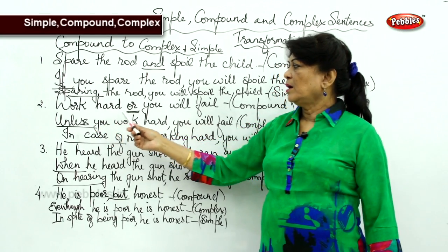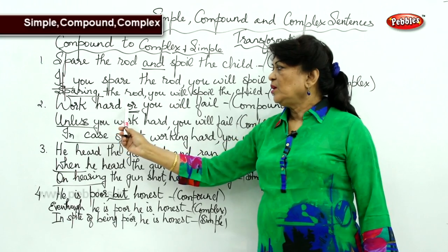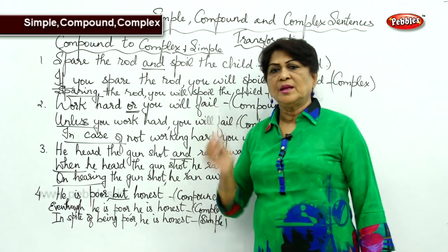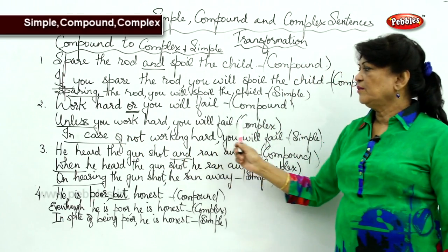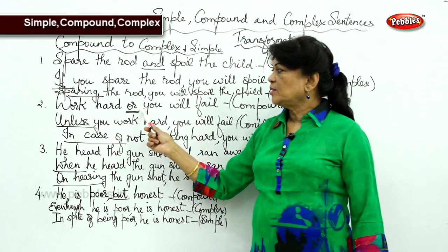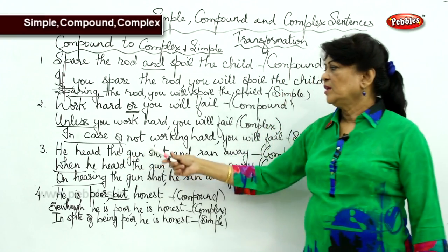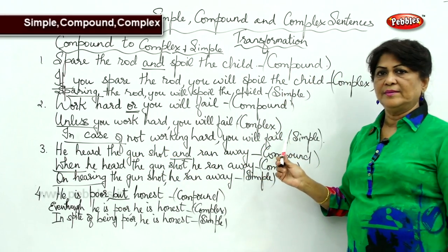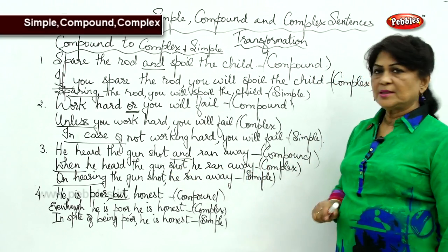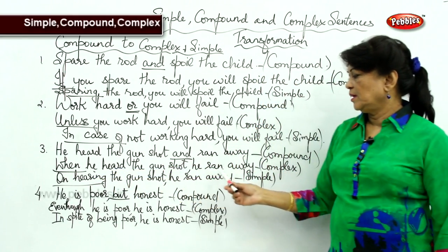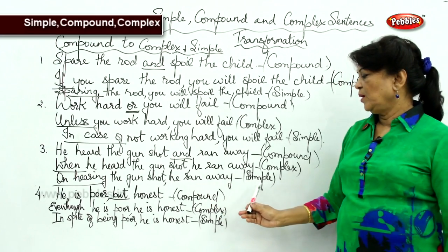Next, 'work hard or you will fail' — 'or' is a coordinate conjunction so it is compound. Whenever we have 'or' in a compound sentence, we have to use 'unless' for complex: 'Unless you work hard, you will fail.' And 'in case of not working hard, you will fail' for simple. Then 'he heard the gunshot and ran away' is compound; 'when he heard the gunshot, he ran away' is complex — 'when' is a subordinate conjunction; 'on hearing the gunshot, he ran away' is simple.